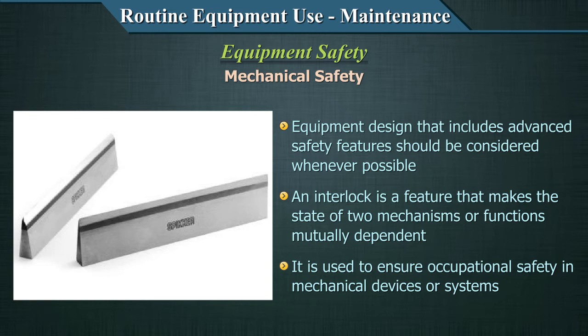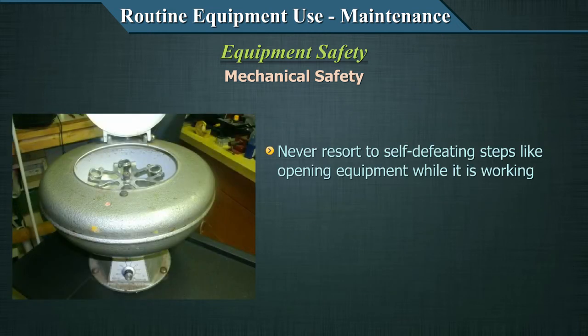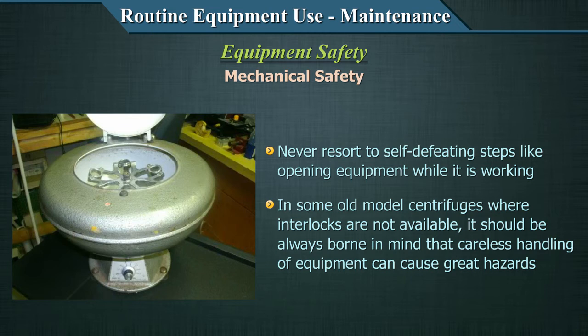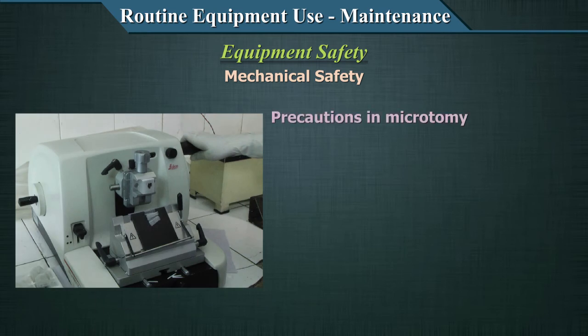Never resort to self-defeating steps like opening equipment while it is working. In old centrifuge models where interlocks are not available, careless handling can cause great hazards. Opening a centrifuge lid before it stops is very risky for two reasons: first, aerosolization of biohazardous samples containing airborne pathogens; second, broken test tubes can send glass fragments flying and cause injury. Another hazardous piece of equipment regarding physical safety is the microtome.